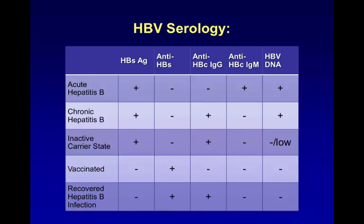You might be asked to distinguish whether someone was vaccinated against hepatitis B or whether they recovered from the infection. It's actually very simple to tell the difference — you look at their core antibody. Both groups will be negative for hepatitis B surface antigen and positive for surface antibody. But the core antibody will be positive in those who've recovered, and the core antibody will be negative in the vaccinated individual.